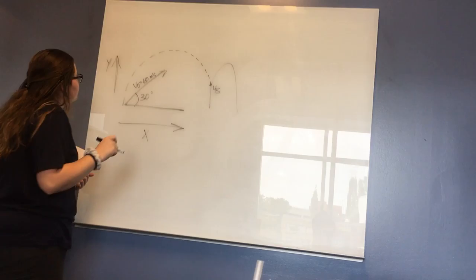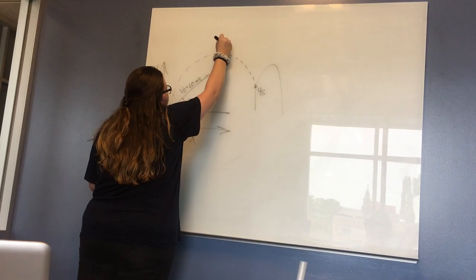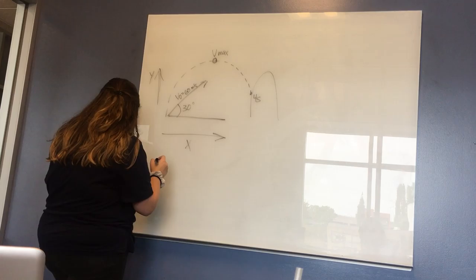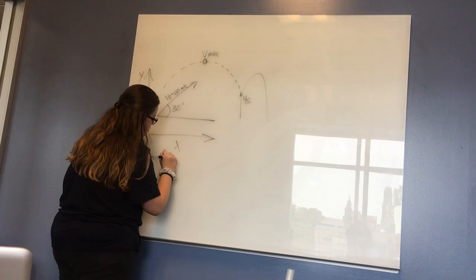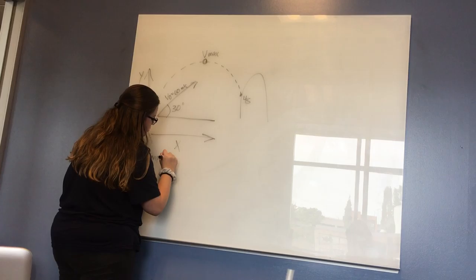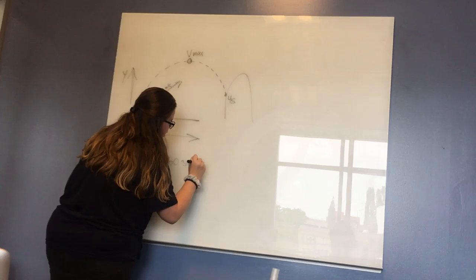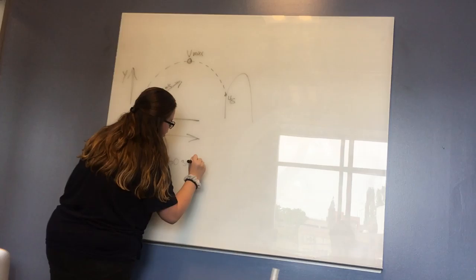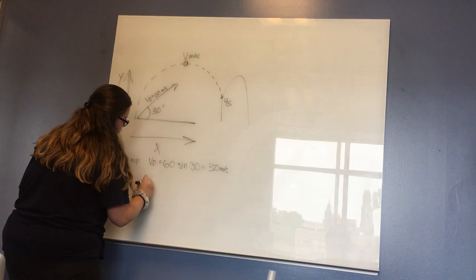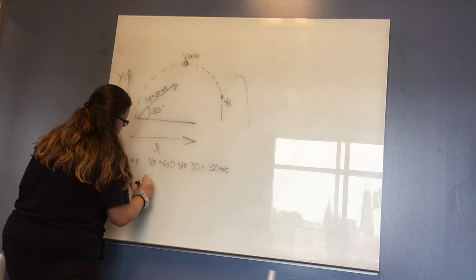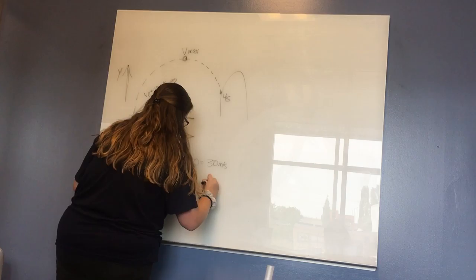For part A we're going to be finding the V max, which is going to be right here. We're going to break it down into the x and y components. For the y component, the initial velocity is going to be 60 sin 30, which is going to equal 30 meters per second. And then for the x component it's going to be 60 cos 30, which is 51.96 meters per second.